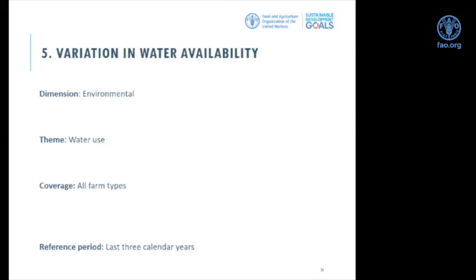The second sub-indicator in the environmental dimension of 2.4.1 is variation in water availability. The theme is water use, coverage is all farm types, and the reference period is the last three calendar years. Irrigated agriculture is by far the main economic sector using freshwater resources. In many places, water withdrawal from rivers and groundwater aquifers is beyond what can be considered environmentally sustainable. Sustainable agriculture therefore requires that the level of use of freshwater for irrigation remains within acceptable boundaries.